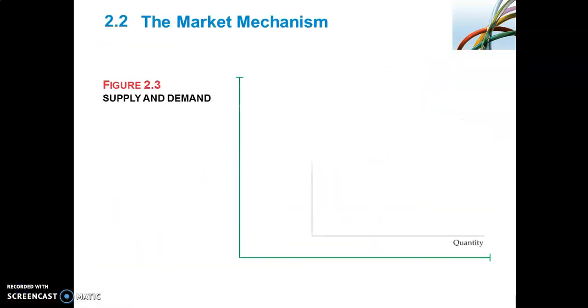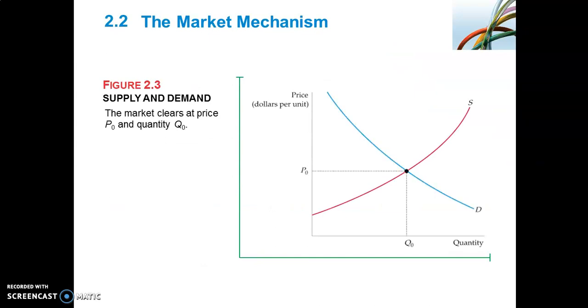In Figure 2.3, we put the supply and demand curves together. On the vertical axis we have price, and on the horizontal axis we have total quantity demanded and quantity supplied. The curves intersect at the market clearing price or equilibrium price P0 and quantity Q0. Equilibrium is the price that equates the quantity demanded and quantity supplied. The market mechanism is the tendency in a free market for the price to change until the market clears.